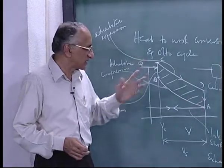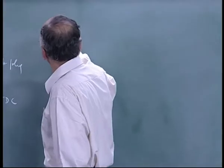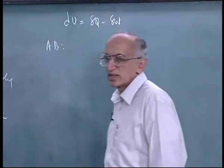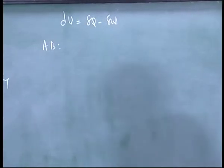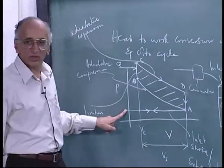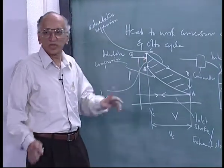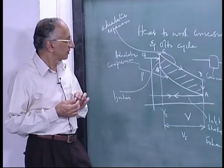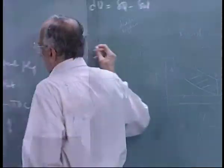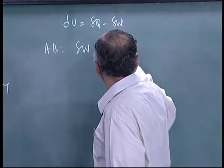To analyze the Otto cycle, I ignore the inlet and outlet strokes as canceling one another. I pretend instead of fuel ignition there is heat addition at B-C, and at D-A there is heat removal. For the stroke A to B (adiabatic), delta Q is zero, so delta W equals dU. This is a closed system with the relation delta Q minus delta W.